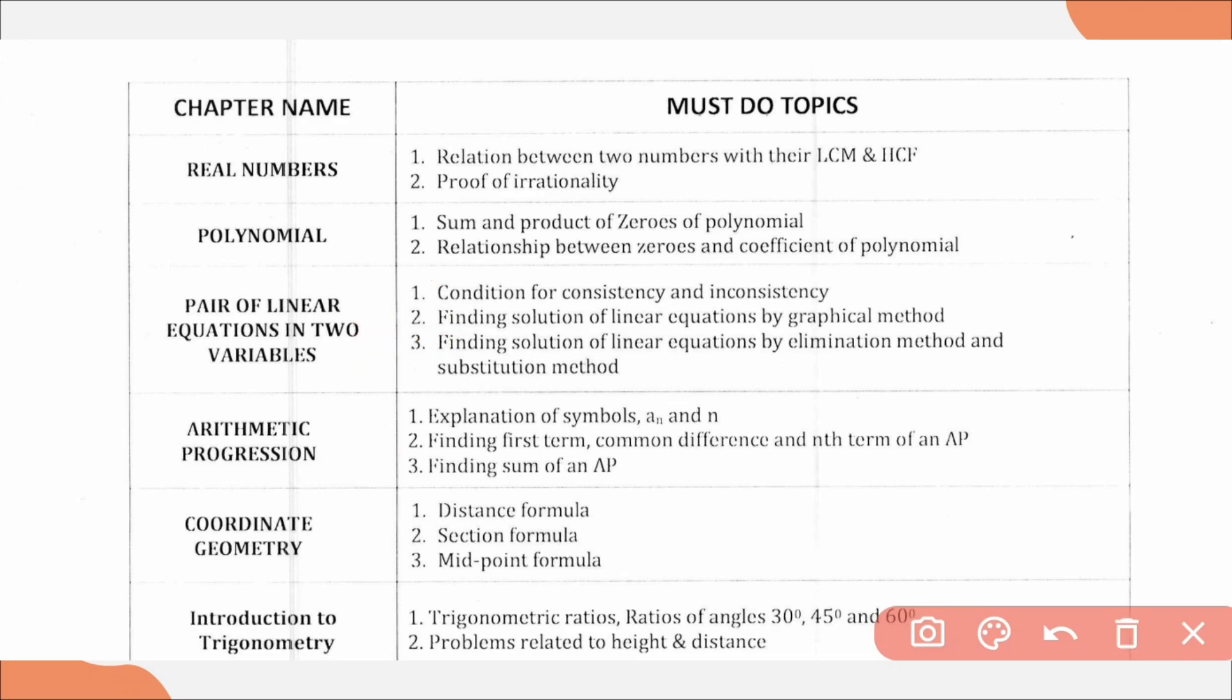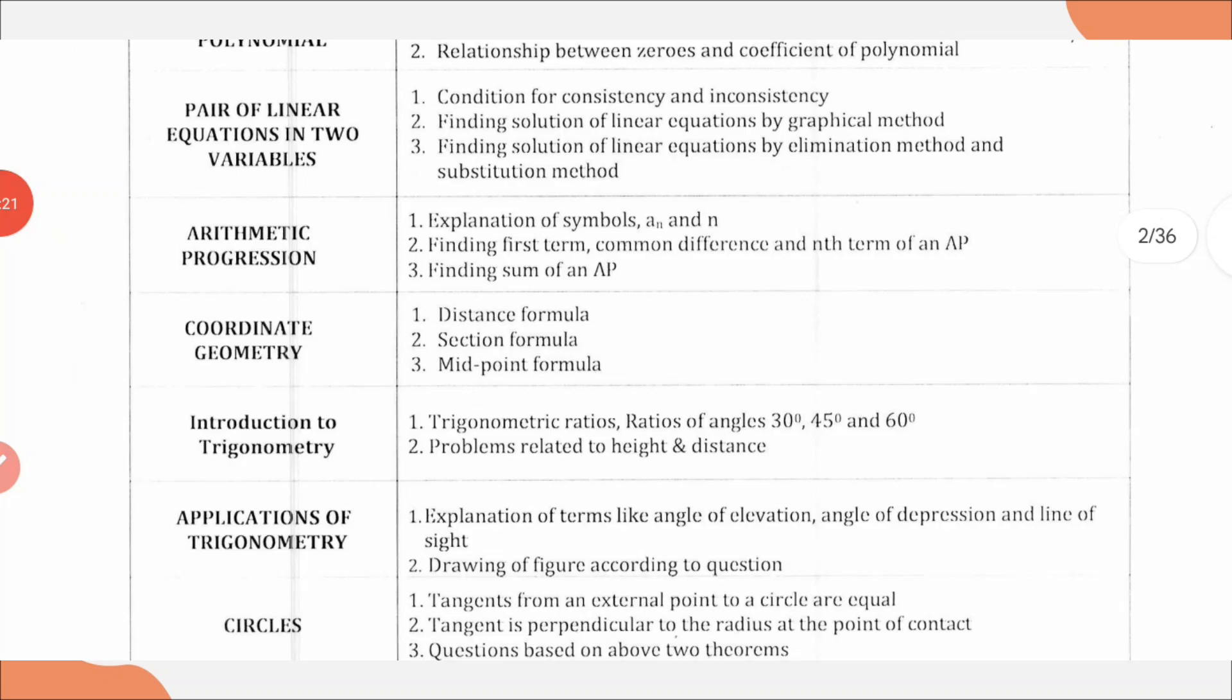Next chapter, Arithmetic Progression. Here we have three topics: explanation of symbols a, n, and d; finding first term, common difference, and nth term of AP; and finding sum of AP. From Coordinate Geometry chapter, we have distance formula, section formula, and midpoint formula.